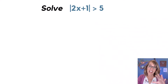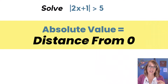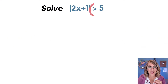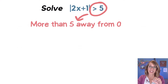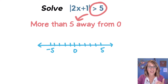The first thing that we need to understand is what is absolute value? Absolute value means a distance from zero. So in our example, we look at that greater than five, and it tells us that 2x plus one is more than five away from zero.